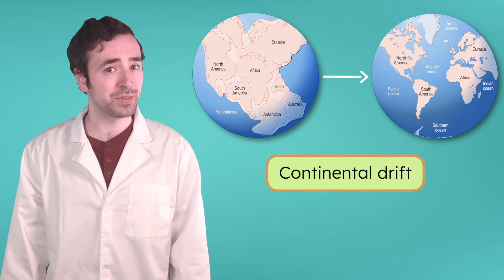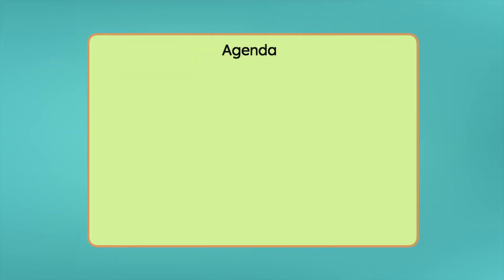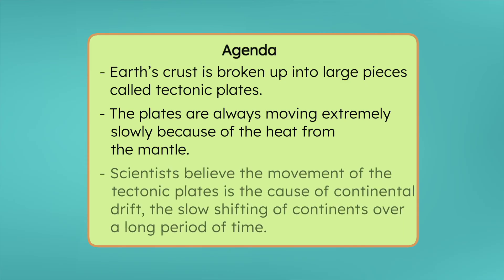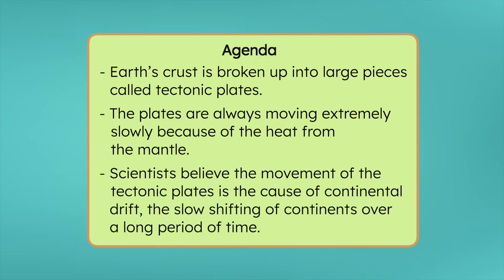Let's review everything we've learned today. Earth's crust is broken up into large pieces called tectonic plates. The plates are always moving extremely slowly because of the heat from the mantle. Scientists believe the movement of the tectonic plates is the cause of continental drift, the slow shifting of continents over a long period of time.